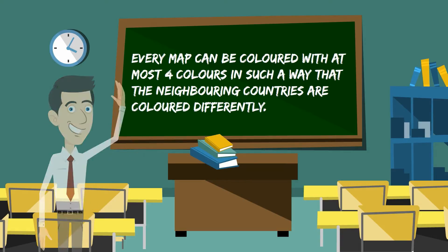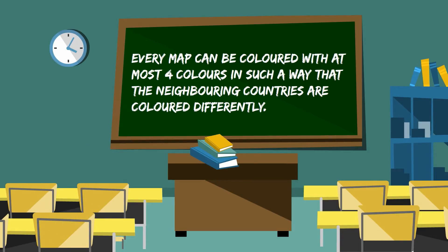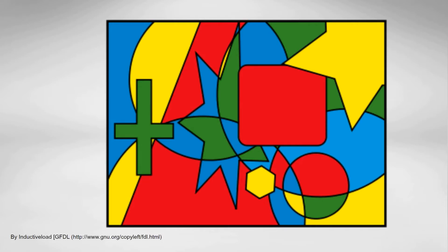So what is the Four Colour Map Theorem? It says that every map can be coloured with at most four colours in such a way that neighbouring countries are coloured differently. Here's a map coloured with four colours, and you can see where we have a boundary between any two countries we need to use a different colour for each country. Just to be clear, where we have four countries meeting at one point, there's no problem having two of those countries coloured green. So where there's just one point, we can have the same colour.